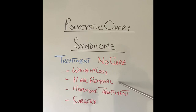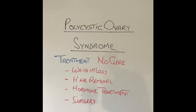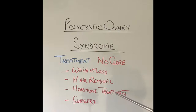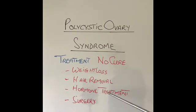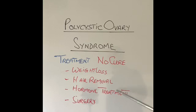Hormone treatment and surgical treatment depend on whether the woman wants to become pregnant. If she does not wish to have a pregnancy, oral contraceptive pills, progesterone treatment, and intrauterine surgical devices all help control the symptoms of PCOS. They also reduce the thickness of the lining of the uterus, which can predispose a small percentage of women to developing uterine cancer.